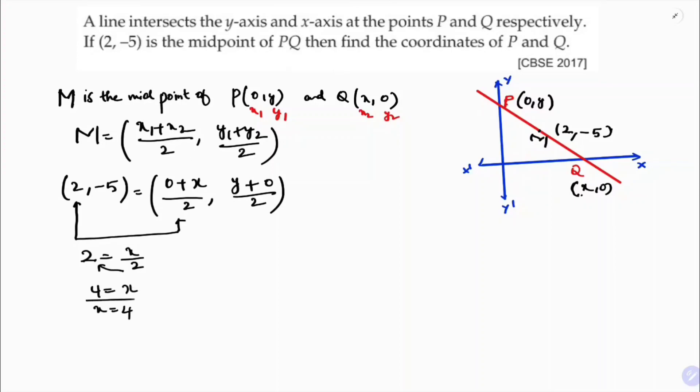In the same way, ordinate with ordinate. Minus 5 equals y plus 0, which is y by 2. 2 times minus 5 is minus 10, so y equals minus 10.